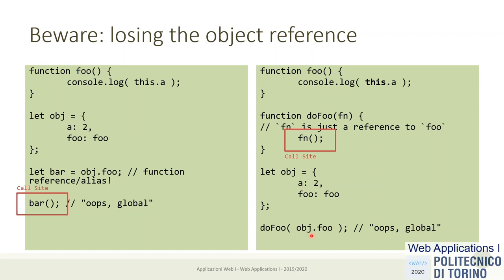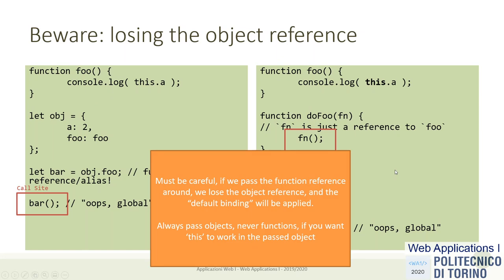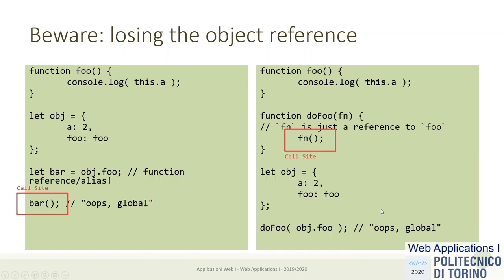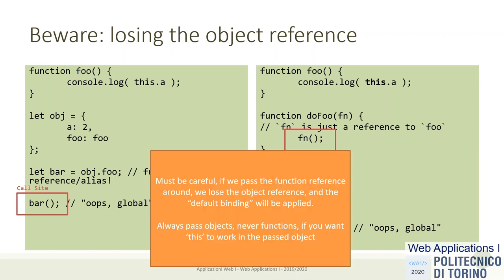When you pass a reference to a function around, you are losing the context. If you want to remember the object, pass the object — don't pass the function directly. You should pass obj to doFoo so 'this' will be correctly applied. If you want to preserve the context, always pass objects to other functions. Passing a function directly decouples it from its context.